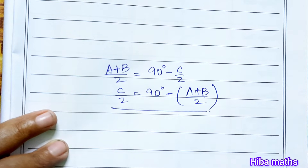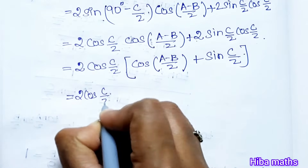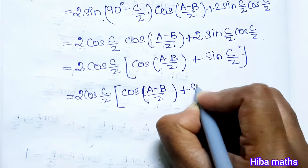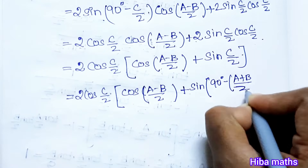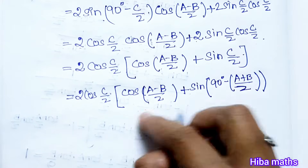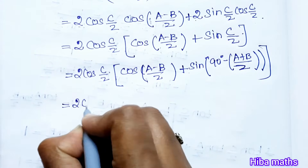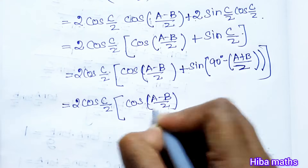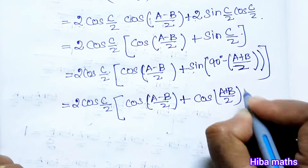We substitute c/2. Now the expression becomes: 2·cos(c/2) · [cos((a−b)/2) + cos((a+b)/2)], where sin(90° − (a+b)/2) has been replaced by cos((a+b)/2). This gives us cos((a−b)/2) plus cos((a+b)/2).